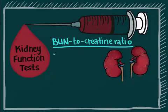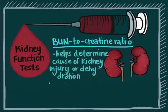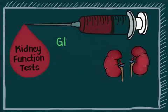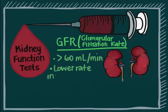BUN to creatinine ratio: this ratio may be used to determine the cause of kidney injury or dehydration. The reference ratio is 8 to 19. GFR, glomerular filtration rate: the desired level is greater than 60 mL per minute. A lower rate indicates kidney disease and it is often used to determine kidney failure.